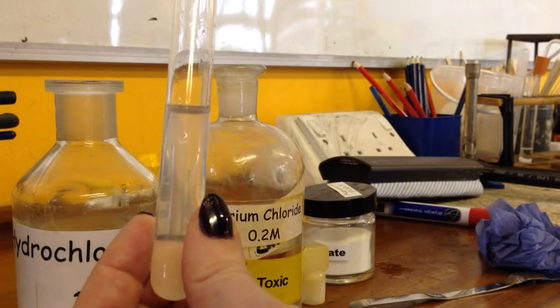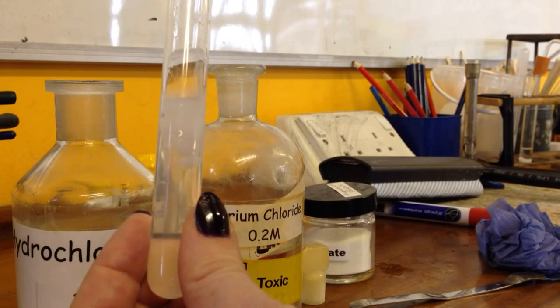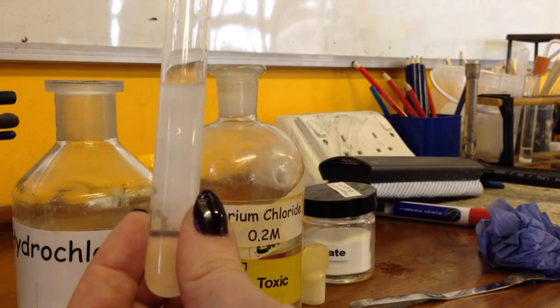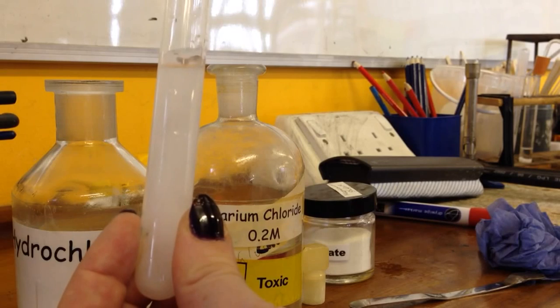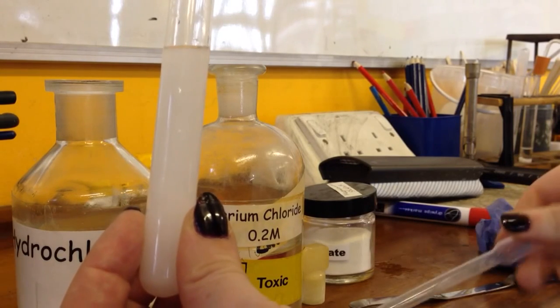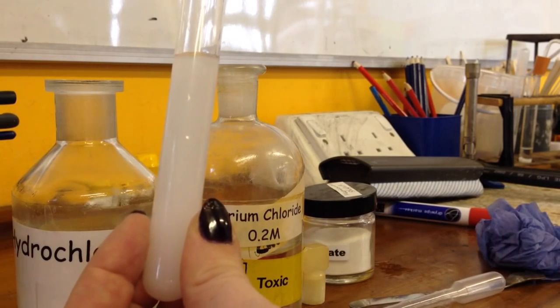So just watch what happens when I add in the barium chloride. Hopefully you can see that quite a strong white precipitate is being formed and it's going white and cloudy.